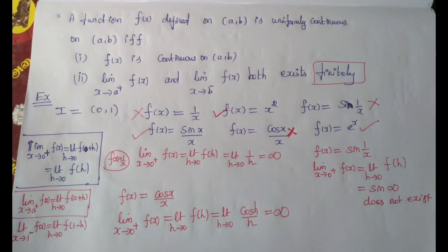For cos(x)/x: cos(0) = 1 in the numerator and denominator is 0, so 1/0 = infinity. The right limit of 0 is infinity, which is not finite. So the limit as x tends to 0-plus does not exist finitely. Therefore cos(x)/x is NOT uniformly continuous. Checking all these functions using the if and only if condition — with limits at a-plus and b-minus — makes it easy to determine uniform continuity, even at the first level.